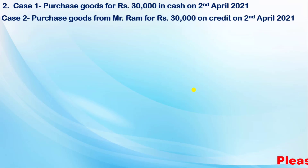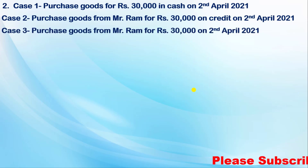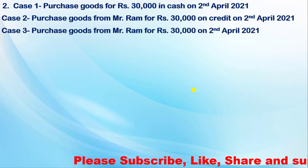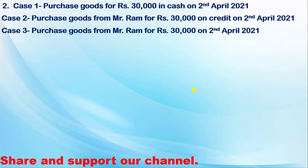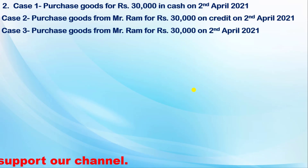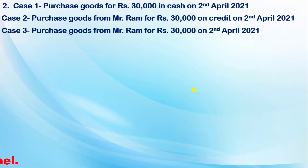Case 3 states: purchased goods from Mr. Ram for 30,000 on 2nd April 2021, without mentioning cash or credit. Many questions are asked this way. Now we will see how to do the journal entry for each case. Starting with Case 1, using the same steps: first, identify which accounts are affected.